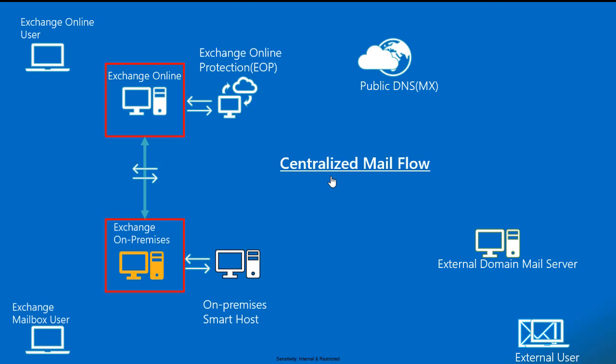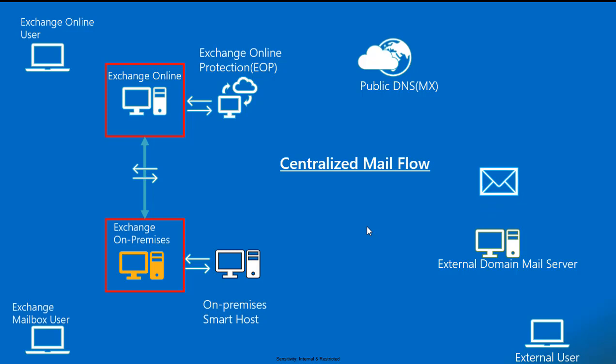When we talk about inbound mail flow in Exchange Online with a hybrid Exchange setup, there are two types: centralized mail flow and decentralized mail flow. In centralized mail flow, when mail is sent from an external domain mail server, it first resolves the MX record pointing to Exchange Online Protection.